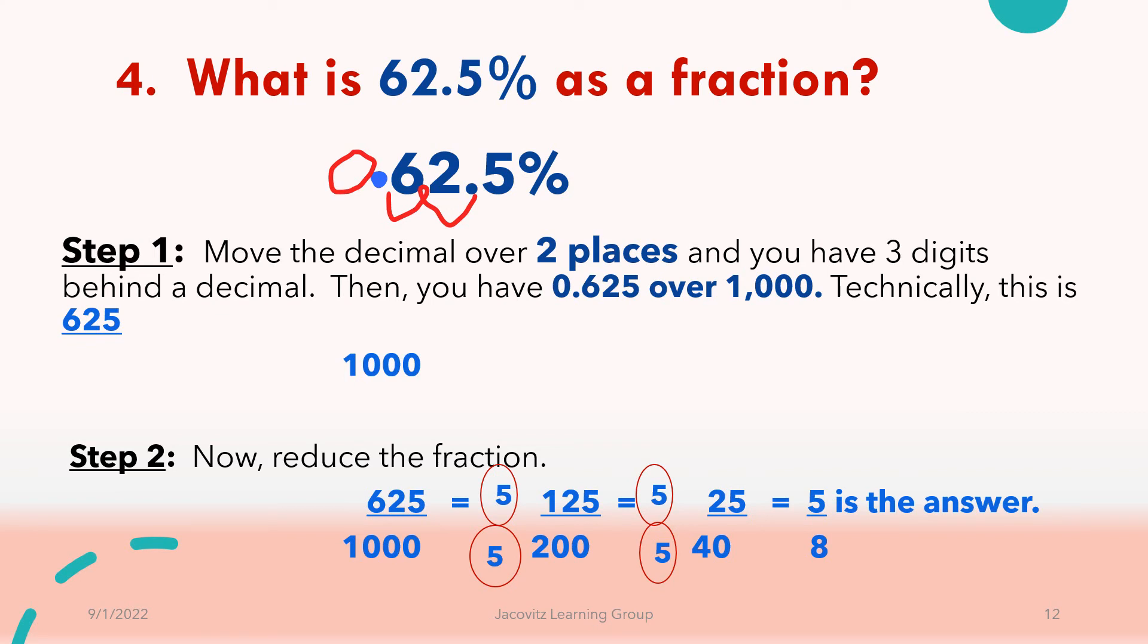But mostly tenths, hundredths, thousandths. It's over the thousandths place. And then you just do a simple reduction of your fraction. I did it two times to keep it simple. Five goes into 625, 125 times. Five goes into 1,000, 200 times. And you had 125 over 200. You reduce it again to 25 over 40. So 5/8 is your answer.